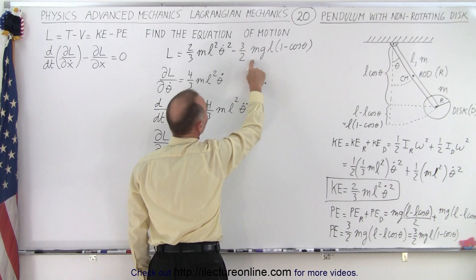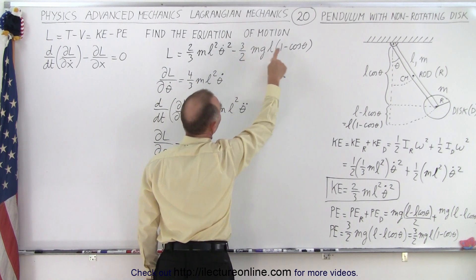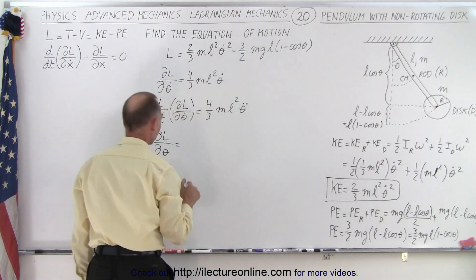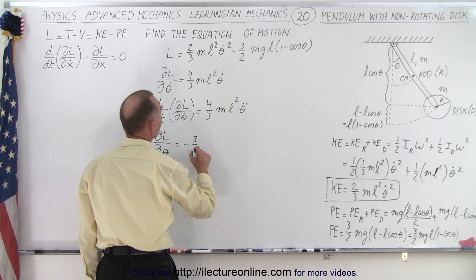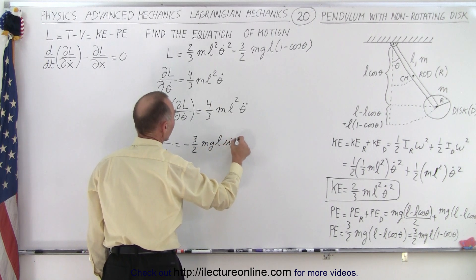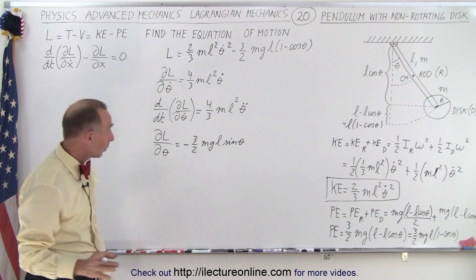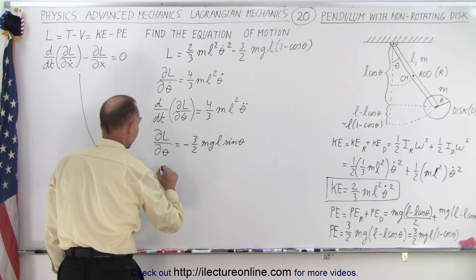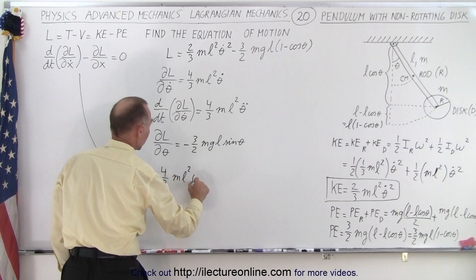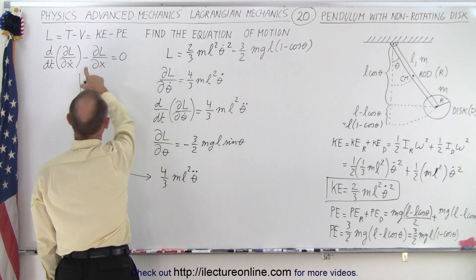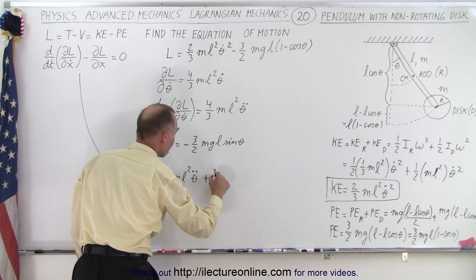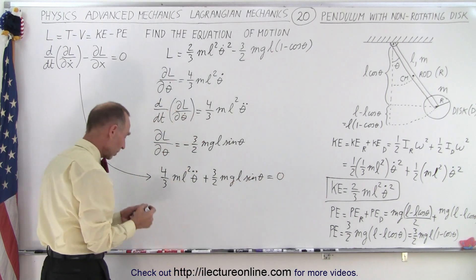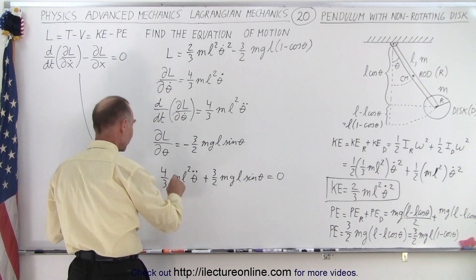Next we find the partial of the Lagrangian with respect to theta. The kinetic term and the constant part of the potential go to zero. The minus times minus cosine theta contributes: taking the derivative of cosine gives negative sine, so ∂L/∂θ = −(3/2) m g L sin theta. Applying the Euler-Lagrange equation gives: (4/3) m L² θ̈ plus (3/2) m g L sin theta = 0.